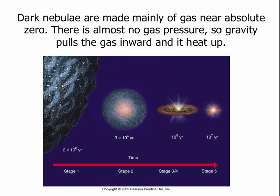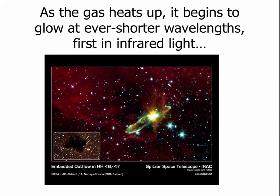This collapse is fast in space terms. You can start with a dark nebula that's a couple light years across, and within about 10 to 20 million years, it's collapsed inward and a star has formed. As the gas heats up, it begins to glow at ever shorter wavelengths — it's a blackbody. So as it heats up at first, you go from almost no emission to emitting light in radio waves, then onto microwaves, and then onto infrared light.